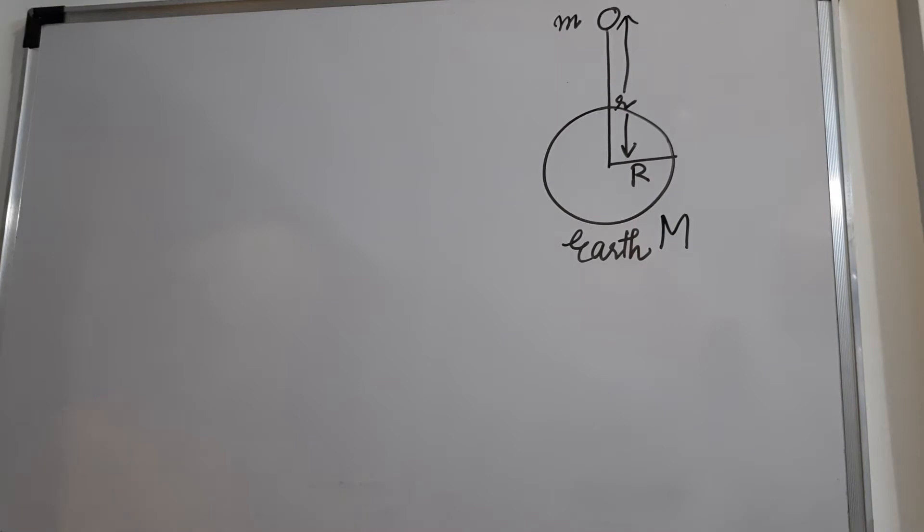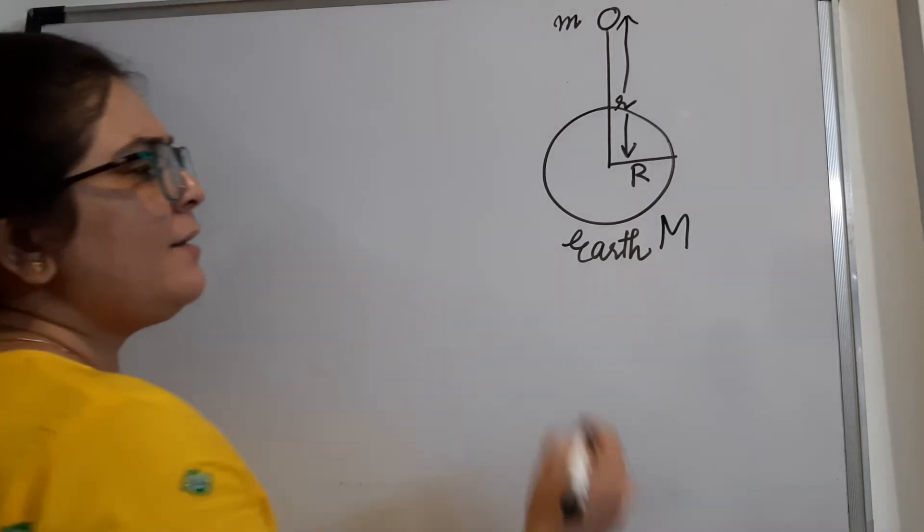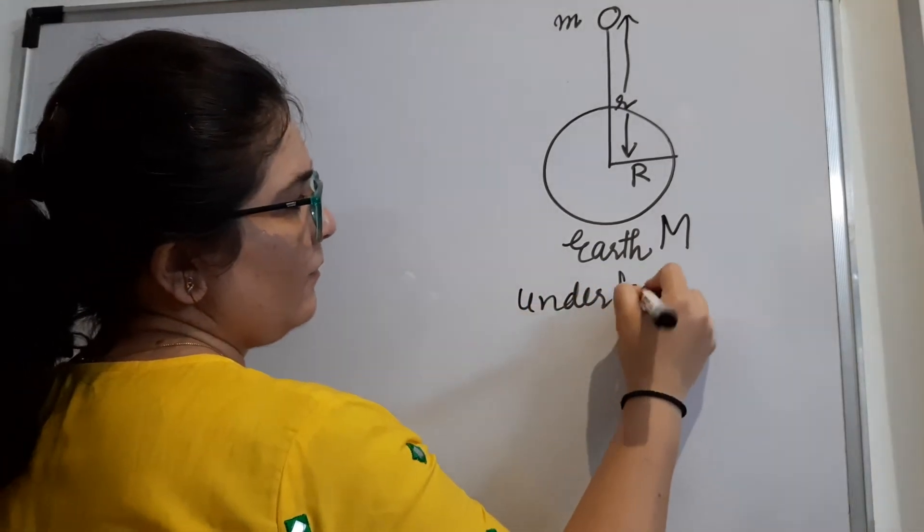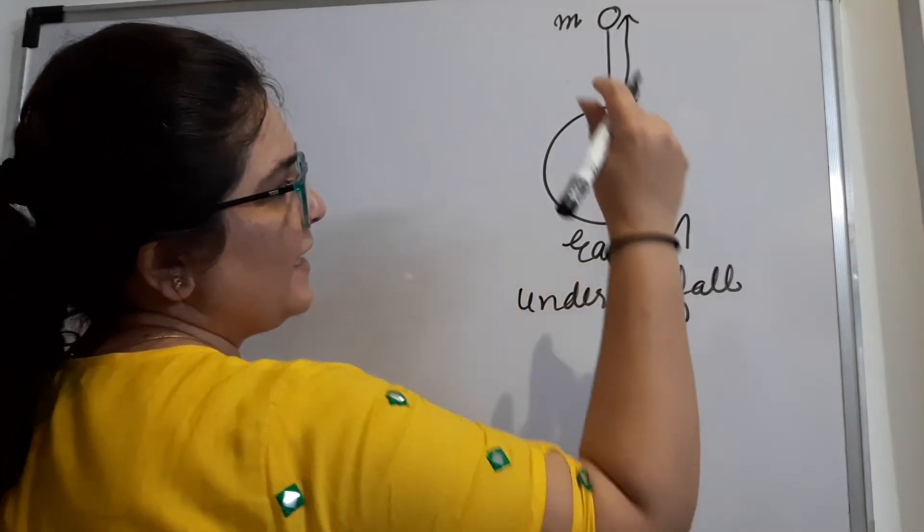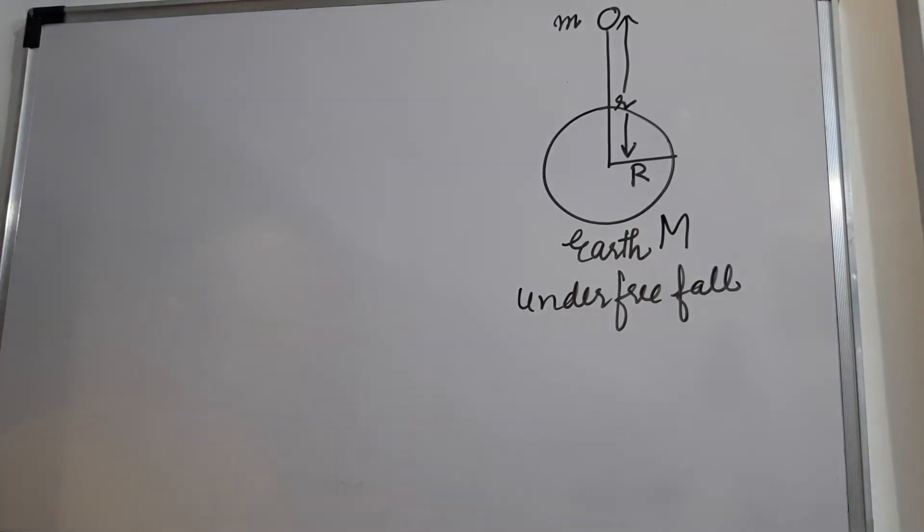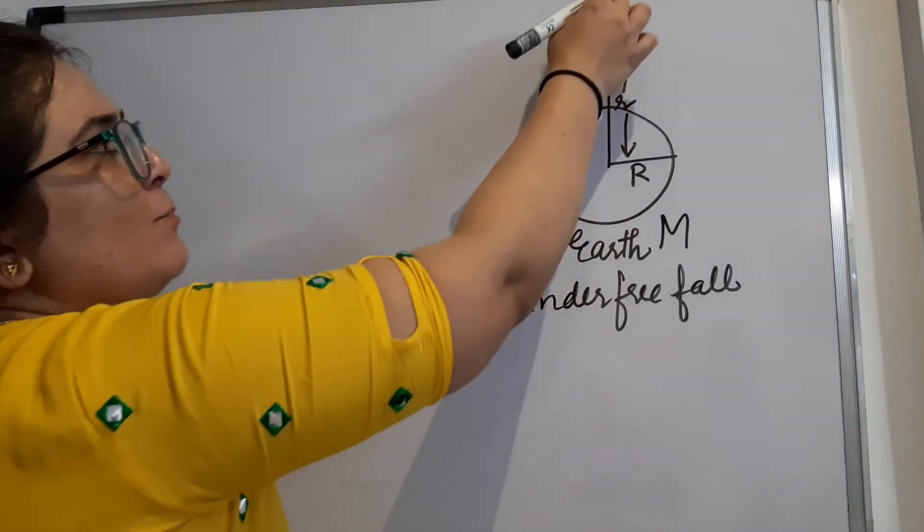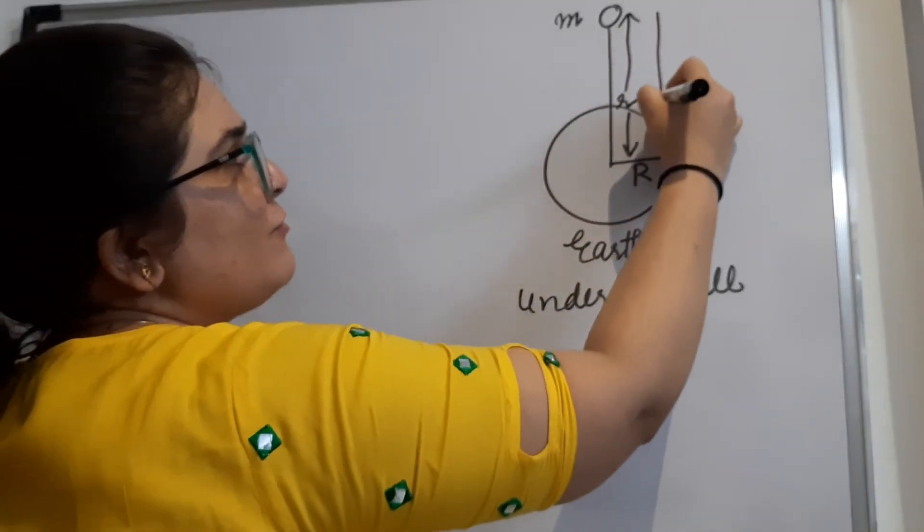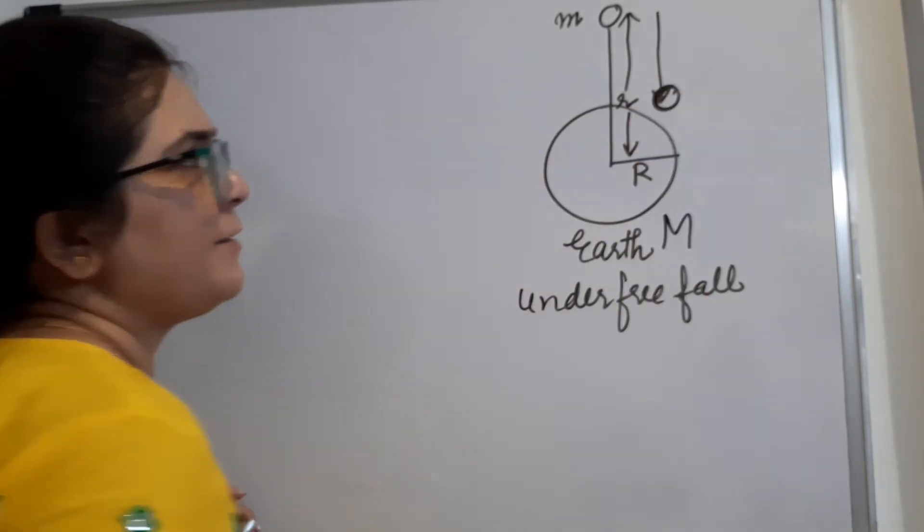So this is an ideal condition that we are considering, and after certain time what will happen under free fall? Free fall is when the object will come down because of the effect of gravity. What will happen? This ball will come down to the surface of Earth.